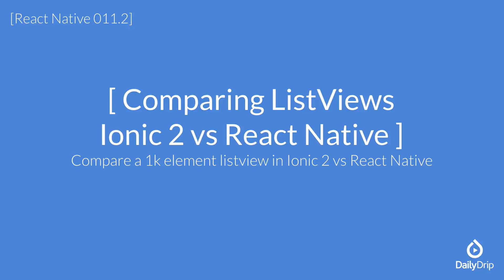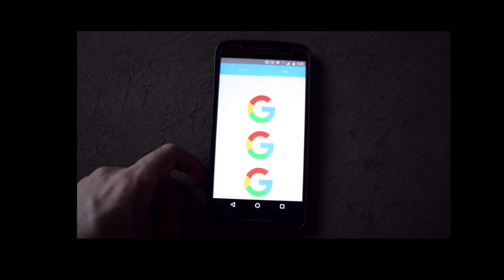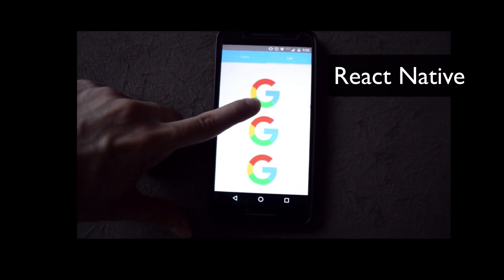This is the first episode of a series in which we'll compare several aspects of Ionic 2 and React Native. In general, people say React Native has better performance. We'll confirm this and also see where else React Native tops Ionic. We'll use Ionic 2 for the comparison because it has been launched recently.